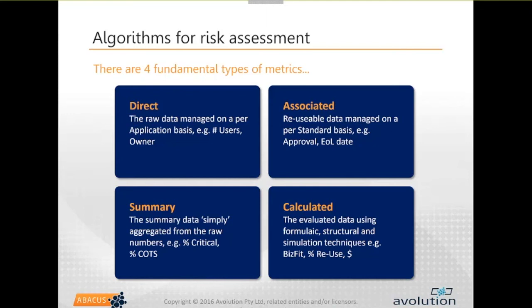Then you start looking at summary measures - essentially rolling up the hierarchy or aggregating things. You might take the end of life date across all the different standards that go towards producing a capability - an aggregated measure would be the earliest of those end of life dates. You're doing minimum, maximum, average, sum, count - all these different traditional aggregated measures, coming up with percentages when talking about averages. Maybe the average number of users is 56, or the average criticality is three out of five. These classic summary measures leverage the aggregated nature of relationships.